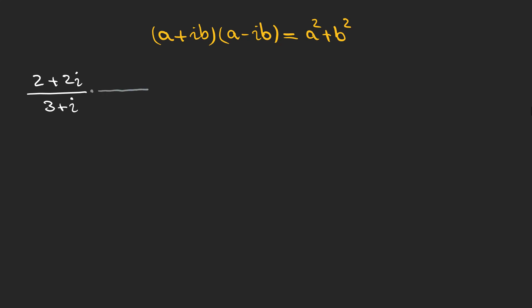What we need to do is multiply this fraction by another fraction equal to one. Note that three minus i is called the conjugate of three plus i — we will talk about conjugates later — but the denominator then becomes a real number, which is what we want.